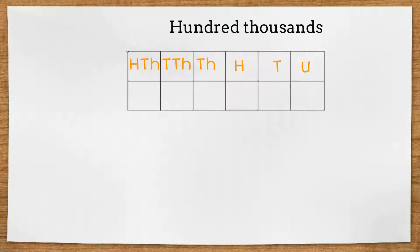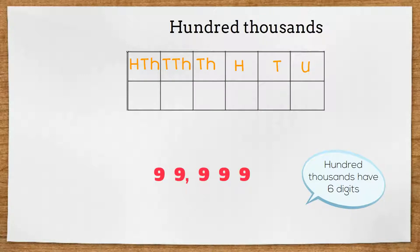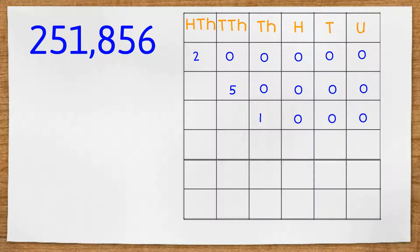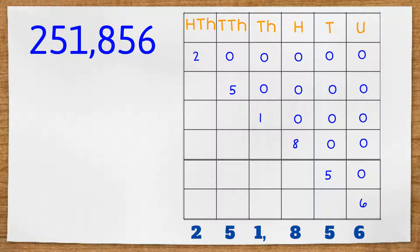We're now going to look at hundred thousands. Hundred thousands have six digits. We would have counted up to ninety-nine thousand nine hundred and ninety-nine before we get to a hundred thousand. We've got here a six-digit number: two five one eight five six. Six digits tells us hundred thousands, so we'll have two hundred thousand, fifty thousand, one thousand — read together as two hundred and fifty-one thousand — then eight hundreds, five tens and six units. All together they make two hundred and fifty-one thousand eight hundred and fifty-six.